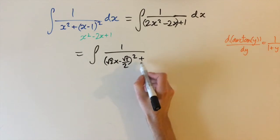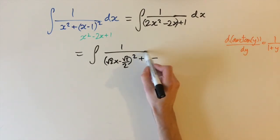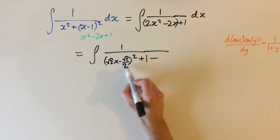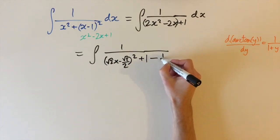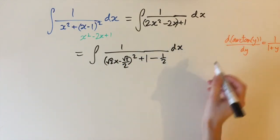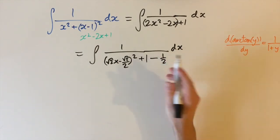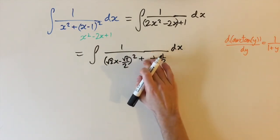Then we just need to balance the constant, so we have a plus 1 and subtract off the constant when we square this out. This squared is just a half, so we need to subtract a half. We have 1 minus a half, we can simplify this as plus a half.